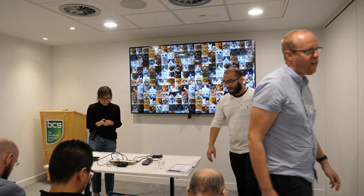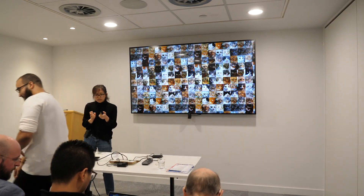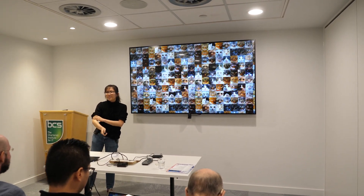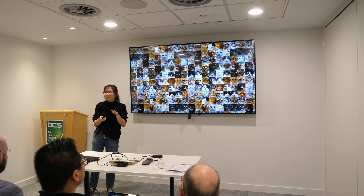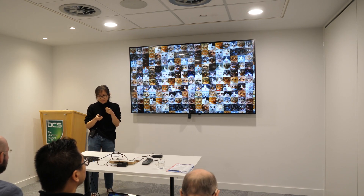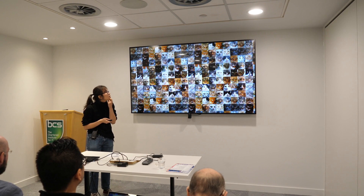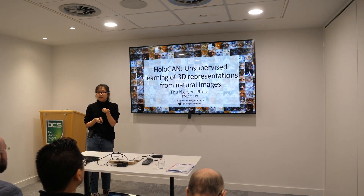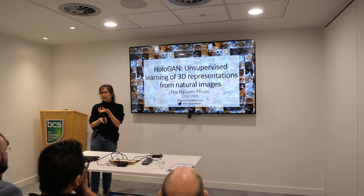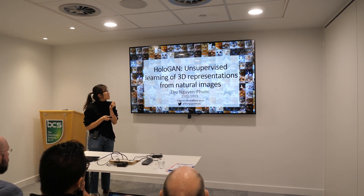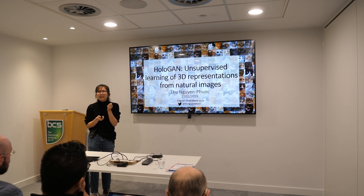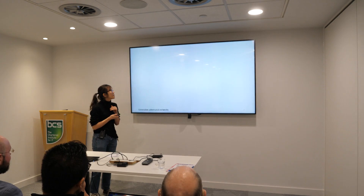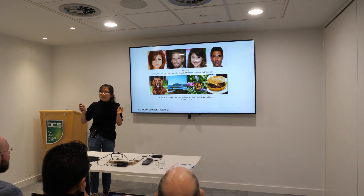Today I'm going to present HoloGAN, which is a GAN network that learns a 3D representation directly from natural images. Even if you never heard about GANs until today, I'm sure you've heard enough about them recently because these models have been everywhere.